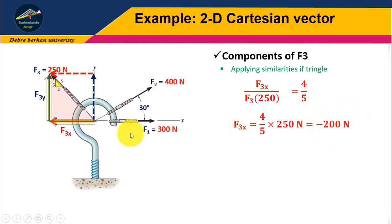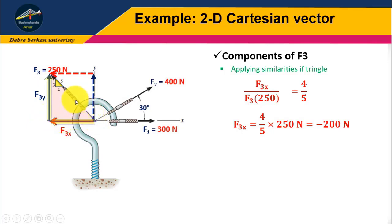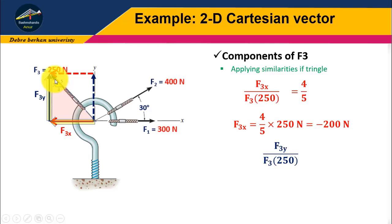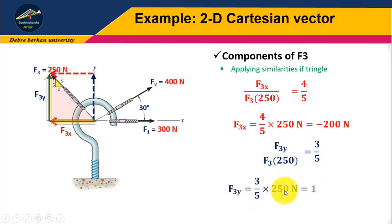The negative sign is because the force is acting in the negative X direction. For F3Y, applying similarity of triangles: F3Y divided by F3 equals 3 divided by its hypotenuse 5. By rearranging, F3Y equals 3 divided by 5 times 250 Newton, which equals 150 Newton. It is positive because it is acting in the upward direction.